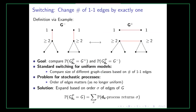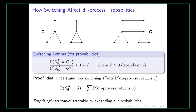The solution to this problem is to simply expand the probability of the DN process producing G based on all possible histories. As shown in the equation, the probability of the DN process producing G equals the sum over all possible orderings sigma of edges of G of the probability of the DN process returning sigma. Our switching lemma for probabilities states that the DN process produces G-plus with a slightly higher probability than it produces G-minus.